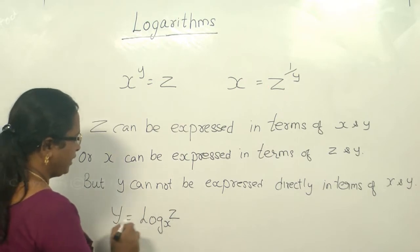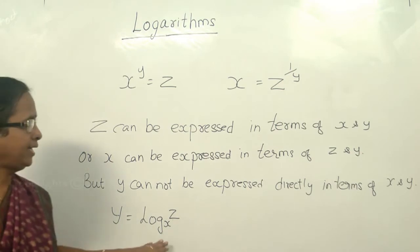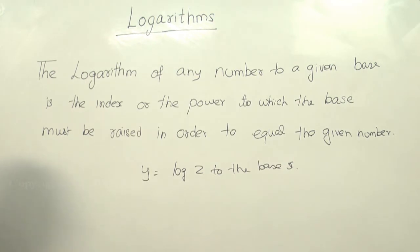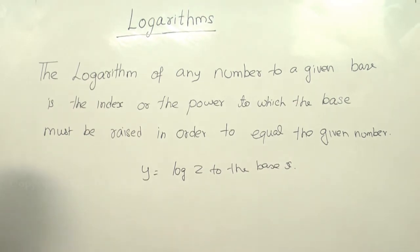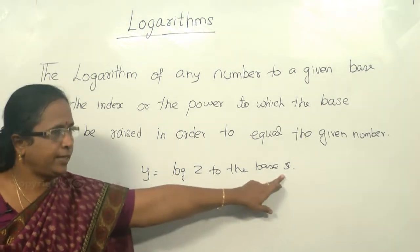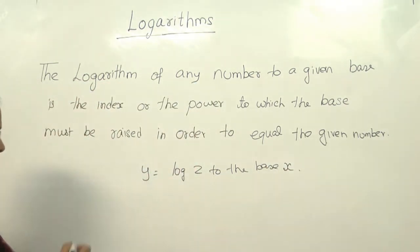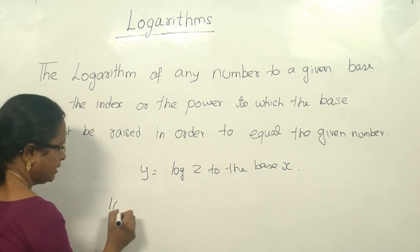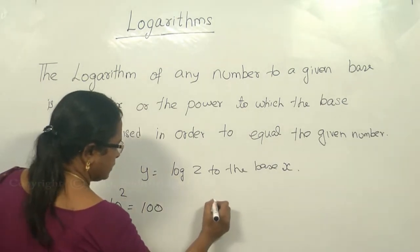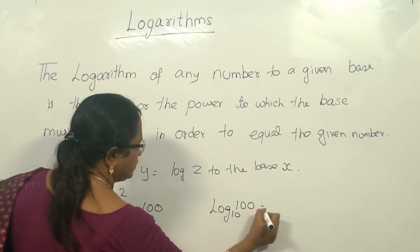We can write y as equal to log of z to the base x. The logarithm of any number to a given base is the index or power to which the base must be raised in order to equal the given number. So y is nothing but the log of z to the base x. For example, 10 squared equals 100 can be written as log of 100 to the base 10 is equal to 2.